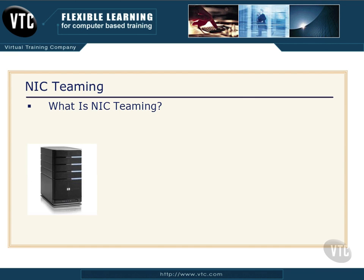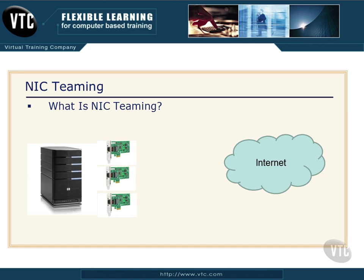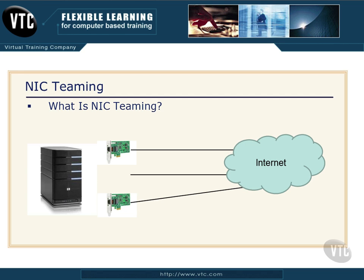In NIC Teaming, I've got a server and I'm connecting to the internet, offering multiple cloud-based services, and I'm worried about connectivity. I end up installing three network interface cards into my machine, and those cards connect out to a network ending up at the internet. Everything's going great, but I may have my services mapped to each one of these IP addresses. So what happens when one card goes bad? Whatever IP address was on that card and whatever functionality was coming across that connection just got lost, and now those clients are isolated away from the server.